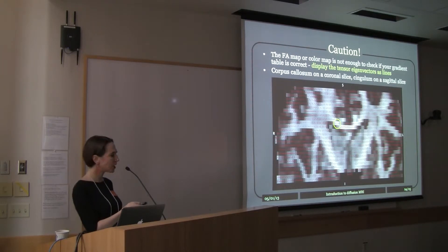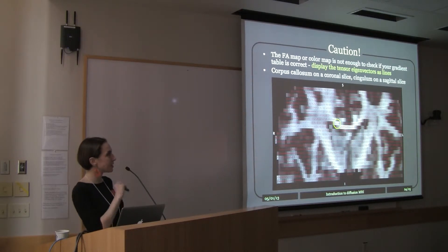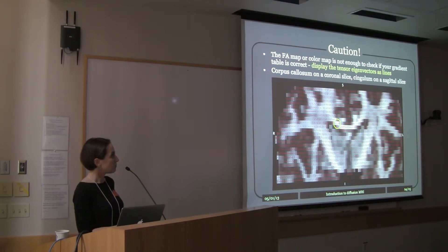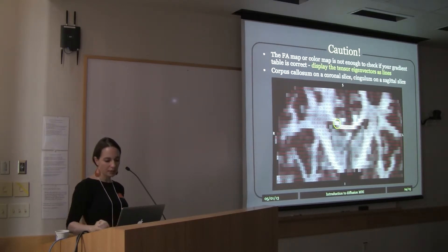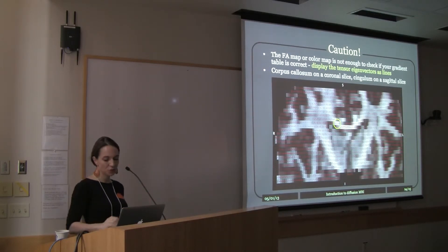You can look at a coronal slice where you can see the corpus callosum. You can look at the cingulum on a sagittal slice, make sure the directions are following it correctly, and also the corticospinal tract to check the inferior-superior direction.